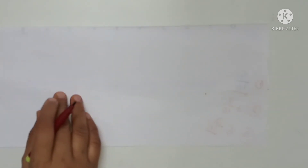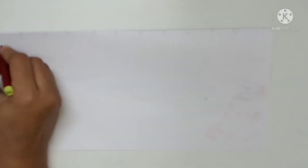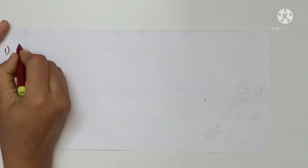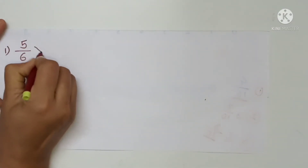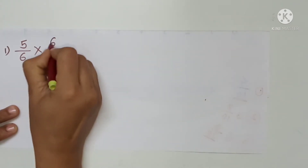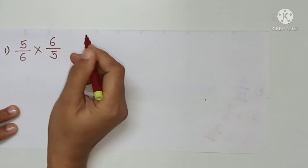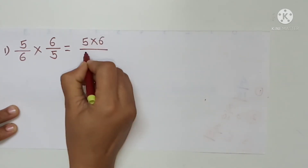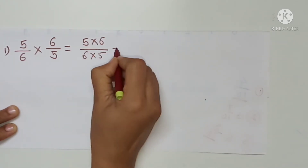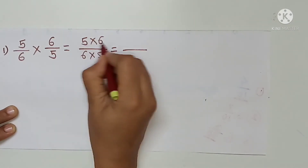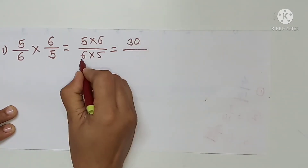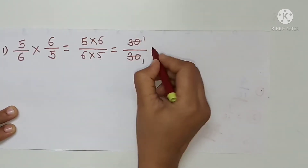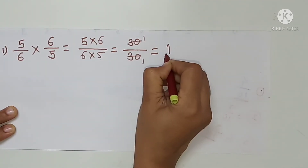Now look at these multiplications. First example: 5 upon 6 multiplied by 6 upon 5. That is 5 multiplied by 6, and 6 multiplied by 5. 5 sixes are 30, and 6 fives are 30. So the product is 30 upon 30, which equals 1.